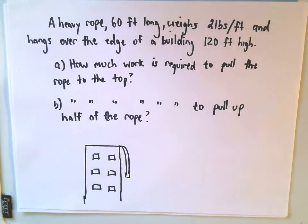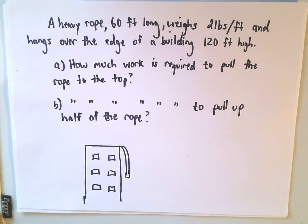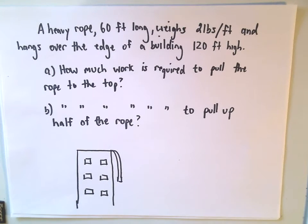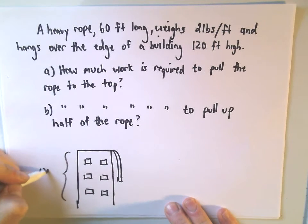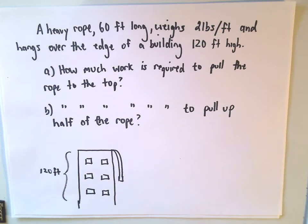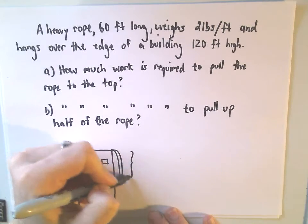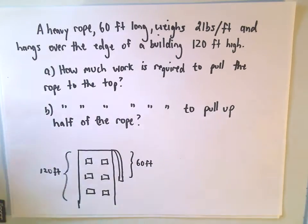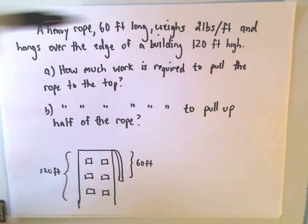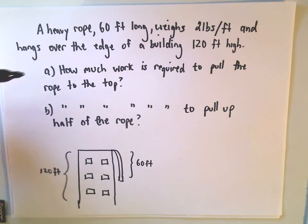So here's going to be my problem. We've got a heavy rope, 60 feet long. It weighs 2 pounds per foot. And it hangs over the edge of a building 120 feet high. So the building's 120 feet. My sad-looking little rope here that's hanging off, that rope we said is 60 feet long. And it says the rope weighs 2 pounds per foot, and it hangs over the edge of the building.